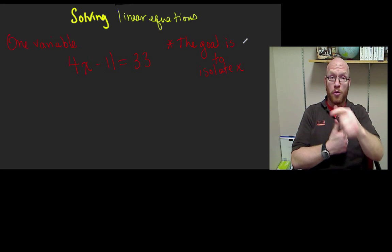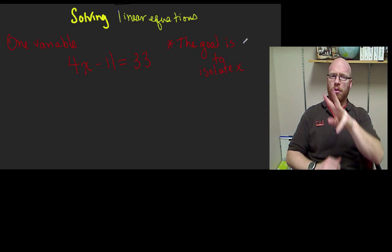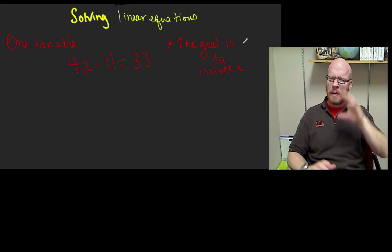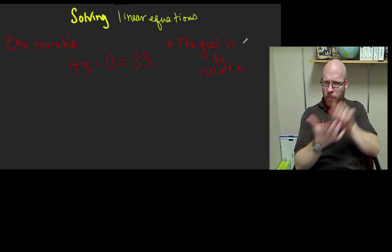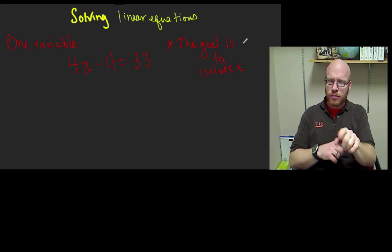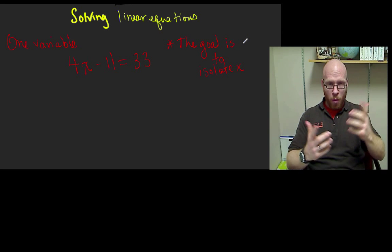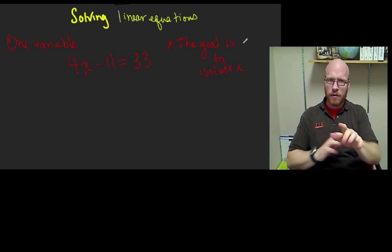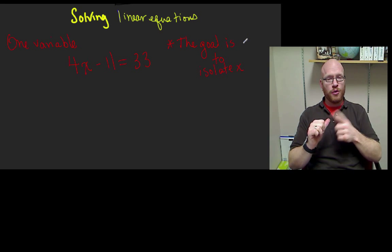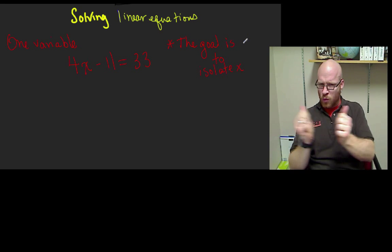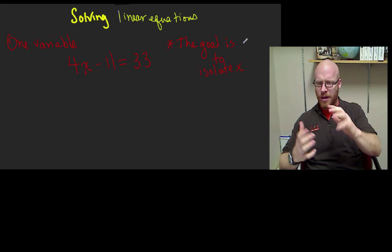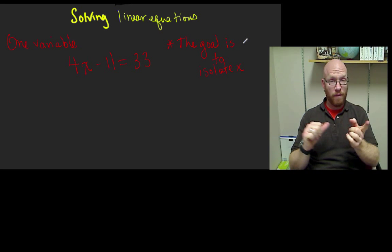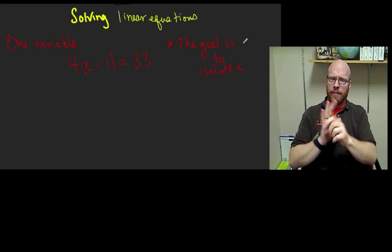Remember, when we say solve and we have one variable, we have 4x minus 11 equals 33. I expect one answer to match this one variable. There aren't many solutions here — just one solution. What we want to do is isolate x on one side of the equal sign and have nothing else with it.